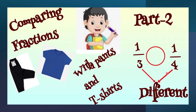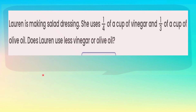What I notice is that the denominators given here — the numbers 3 and 4 — they are different, but on the top the numbers are the same. Let's go to our next slide. We have this problem: Lauren is making salad dressing. She uses one quarter of a cup of vinegar and one third of a cup of olive oil. Does Lauren use less vinegar or olive oil? This is our target today.